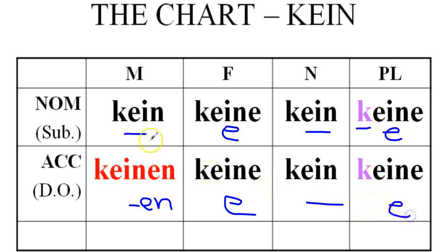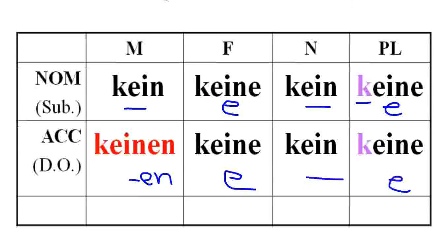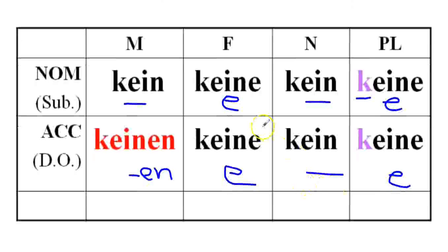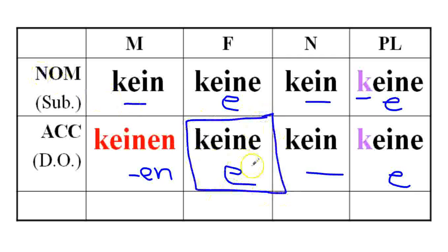Those are kind of memory tricks to help you with the endings. Keine, keine, keine... So that's when I say things like ich habe keine Zeit. I is the subject, time is the direct object. So it's accusative case. Ich habe keine Zeit.